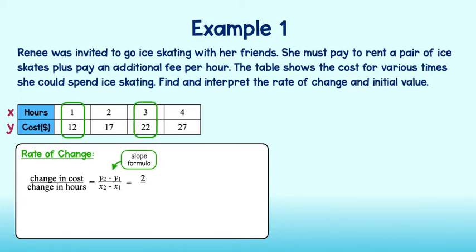We will plug these values into our formula. 22 minus 12 equals 10, and 3 minus 1 equals 2. This simplifies to 5. The slope, or rate of change, is 5.